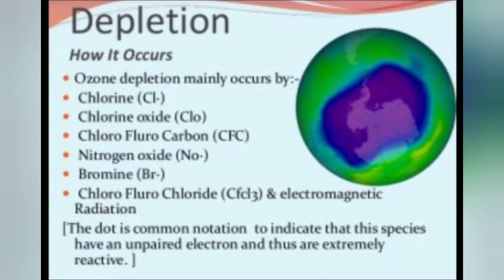How can we protect the ozone layer? Avoid the consumption of gases dangerous to the ozone layer. Some of the most dangerous gases are chlorofluorocarbons, halogenated hydrocarbons, methyl bromide, and nitrous oxide.